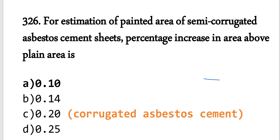Question number 326: For estimation of the painted area of semi-corrugated asbestos cement sheets, the percentage increase in area above the plain area is 0.10. So option A is the correct answer.